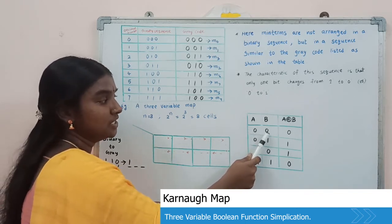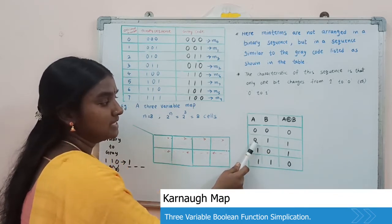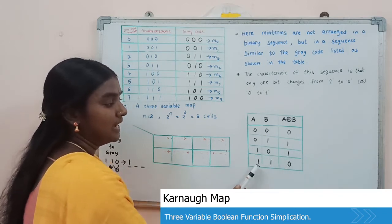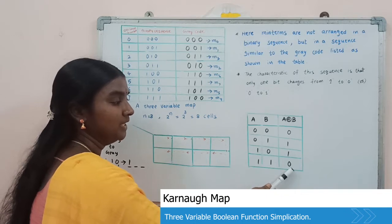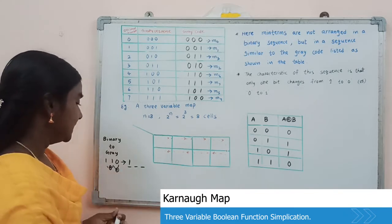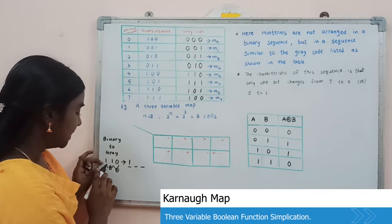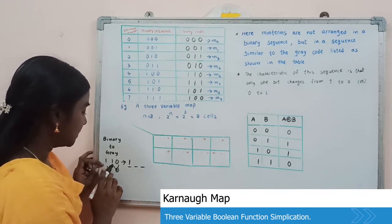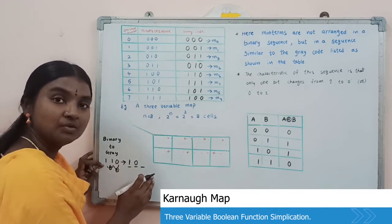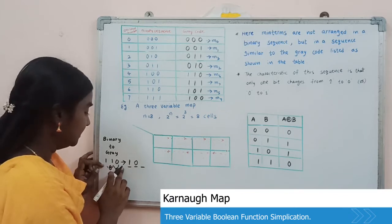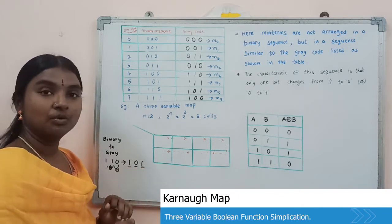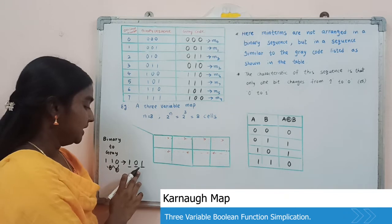The XOR truth table is: inputs 00 give output 0; inputs 01 give output 1; inputs 10 give output 1; and inputs 11 give output 0. Based on this truth table, the second bit is 1 XOR 1, which equals 0. To find the third bit, we do XOR between the second and third bit: 1 XOR 0 equals 1. So the Gray code of binary 110 is 101.